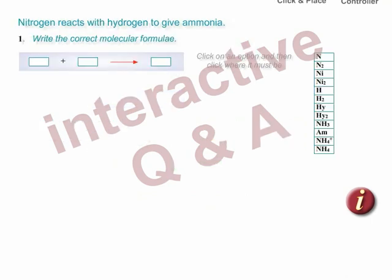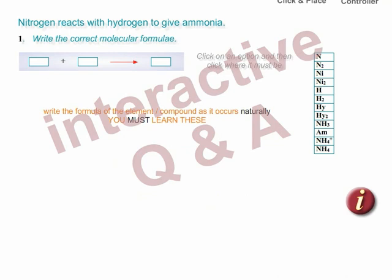Try our new method on this example. There are two nitrogen atoms on the left. How many ammonia molecules must there be?